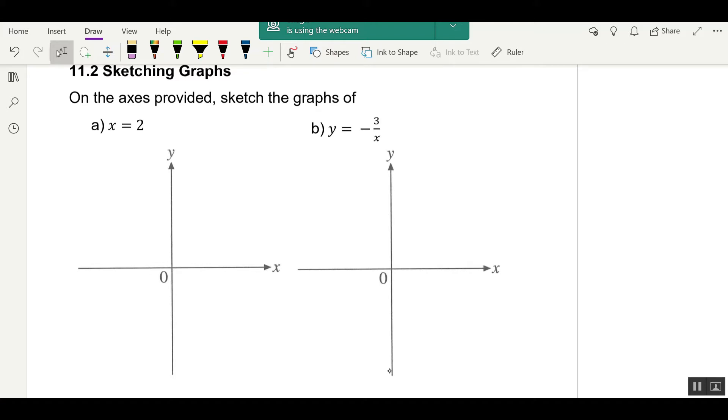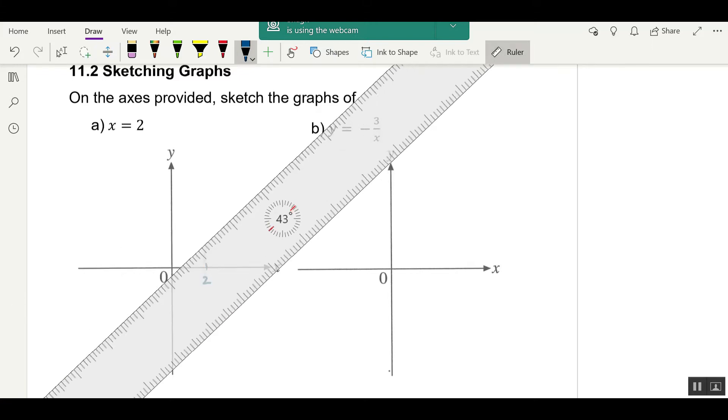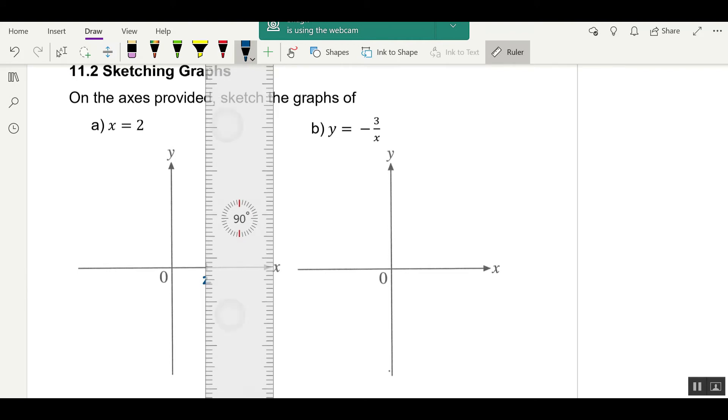But what kind of straight line is this? Where is x equals to 2? x equals to 2 would be here. This line only passes through x equals to 2. So then, the graph would look like this. A vertical line that cuts at x equals to 2 only.